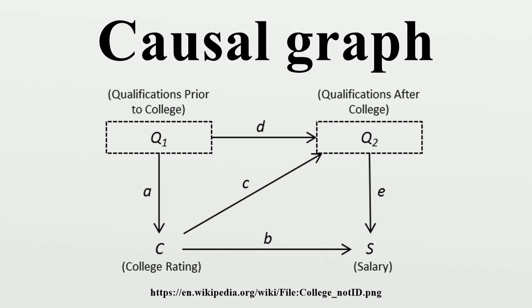They also allow researchers to test for external validity and manage missing data and selection bias. Causal graphs were first used by geneticists under the rubric of path diagrams. They were later adopted by social scientists and, to a lesser extent, by economists.